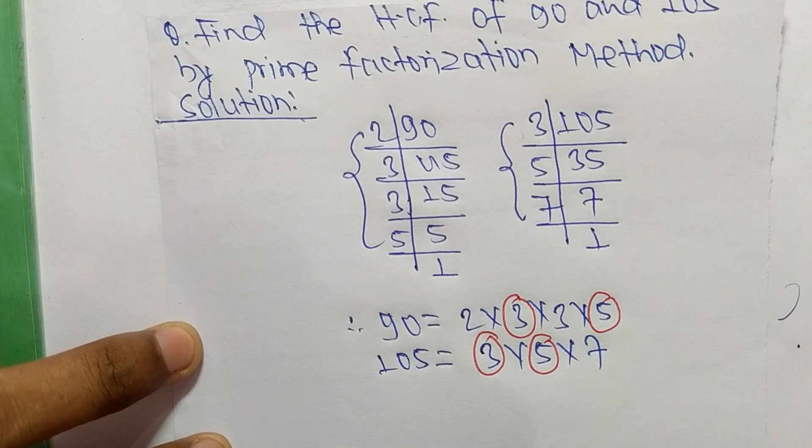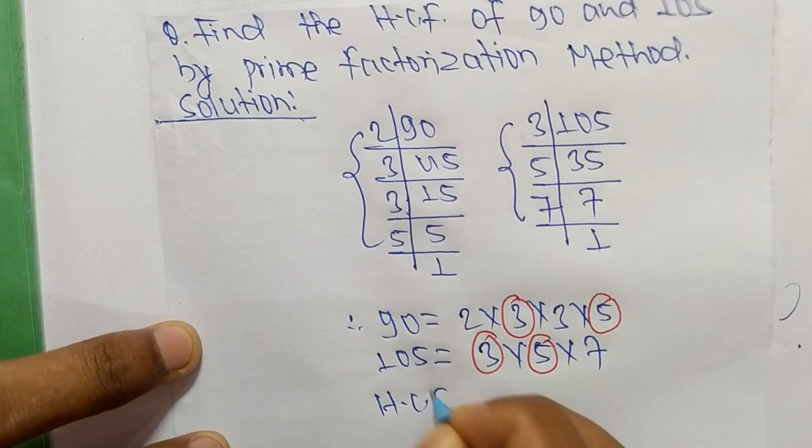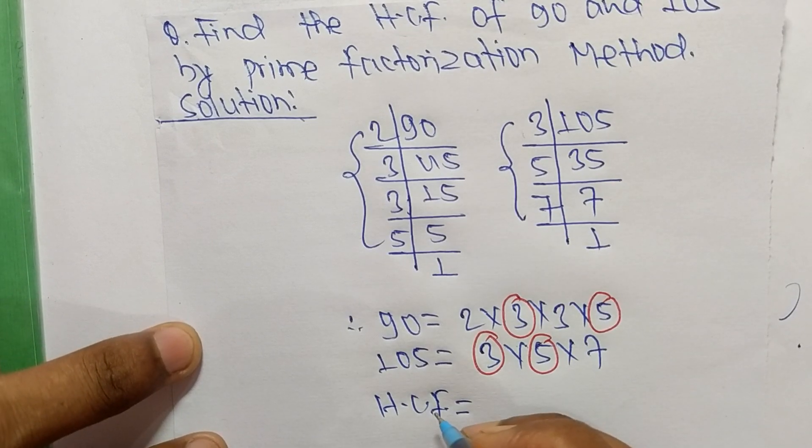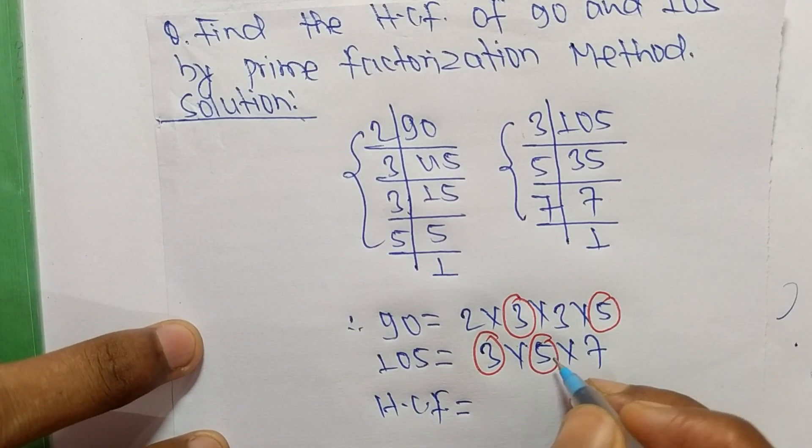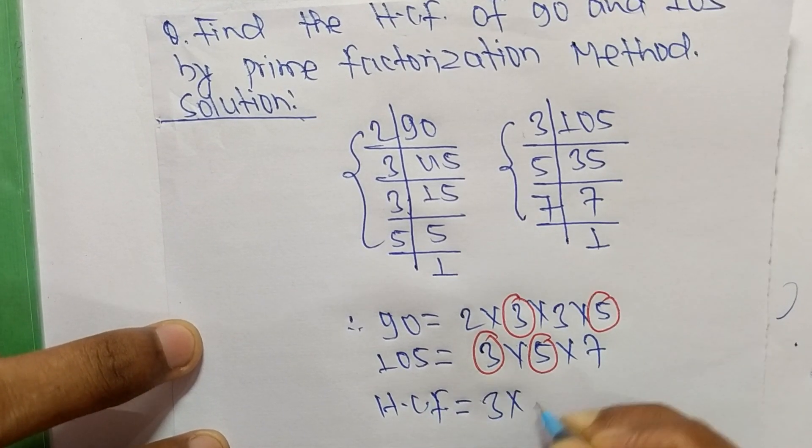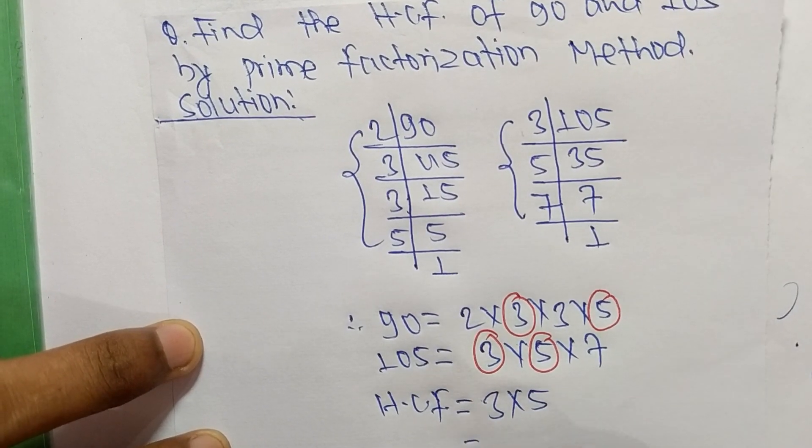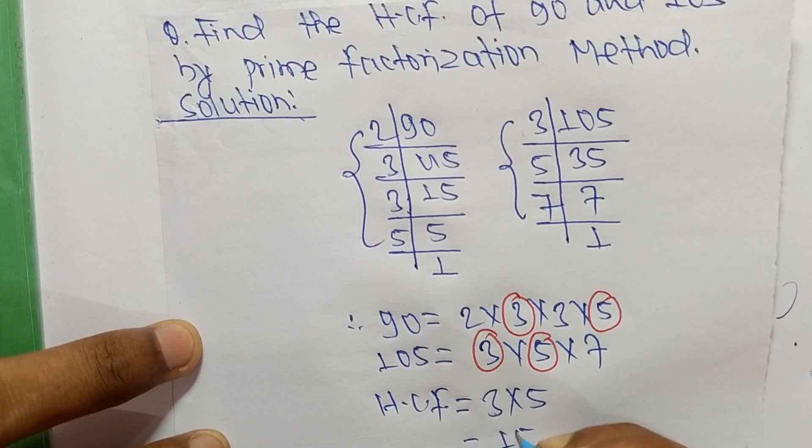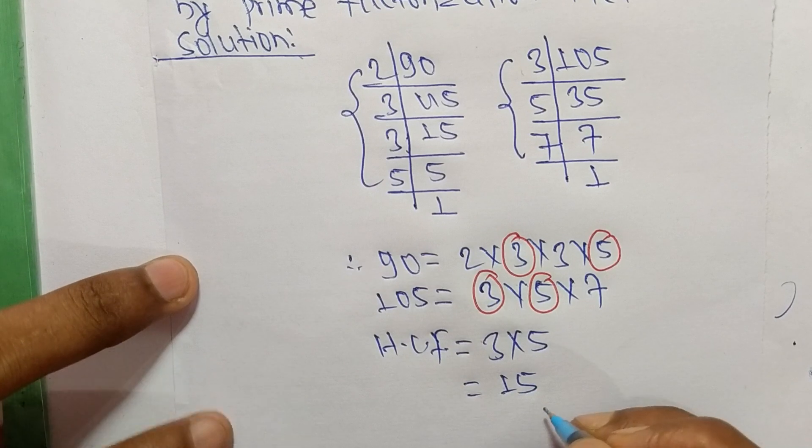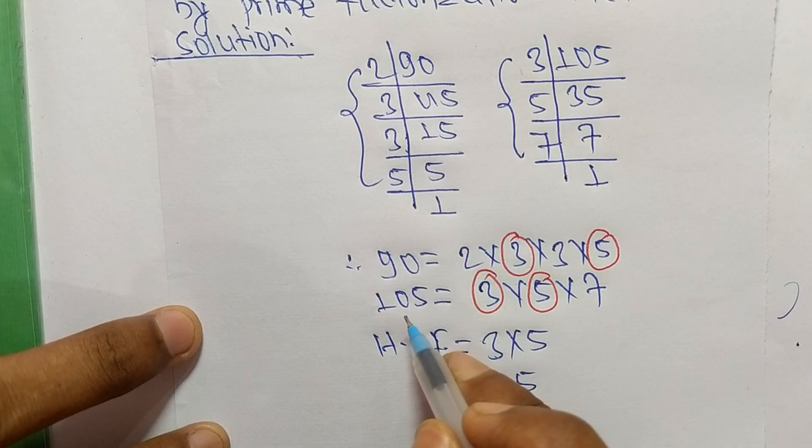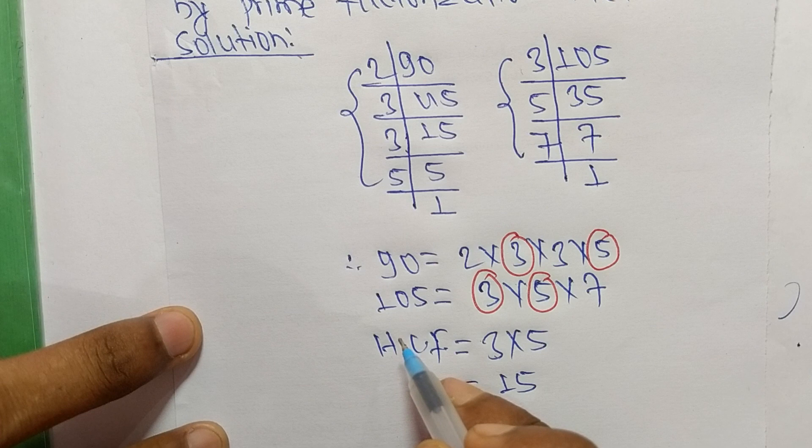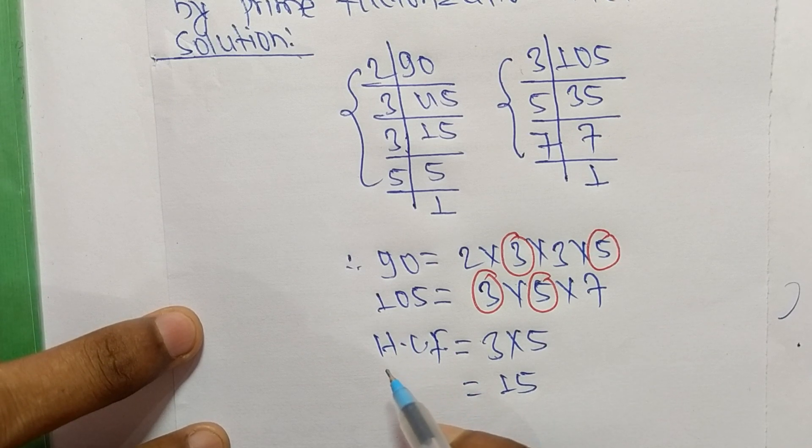So HCF is equal to the product of common factors which are 3 and 5. So 3 times 5 mean 15. So 15 is the HCF of 90 and 105. So this much for today and thanks for watching.